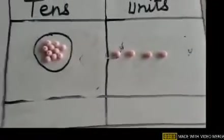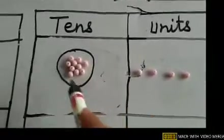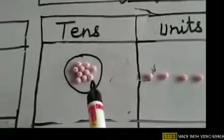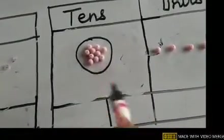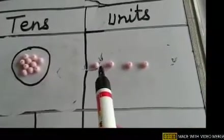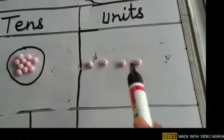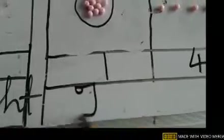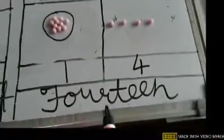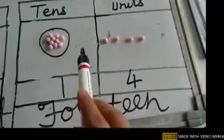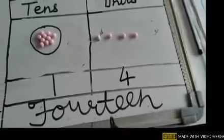Now the next example. Can you see the small beads? I have made 1 group of 10 beads — so we are having only 1 ten. And how many single beads? Count with me: 1, 2, 3, and 4 — so 4 single beads. The total number is 14. In 14 we get 1 ten and 4 units.